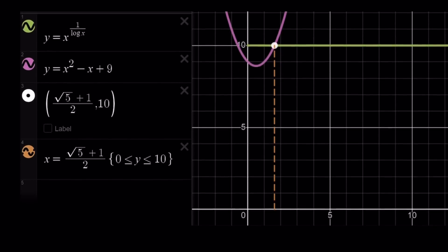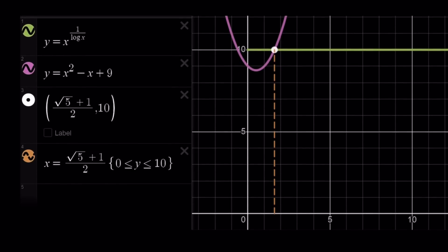Let me go ahead and show you the graph real quick, and now we're going to finish up. This is the graph of y equals x to the power 1 over log x, which is a horizontal line with x positive. And the second one, the purple, the pink one, is a parabola, which intersects the horizontal line at one point, because our line is kind of like a half line. And then the intersection point, you can see root 5 plus 1 over 2 comma 10, and so on and so forth.